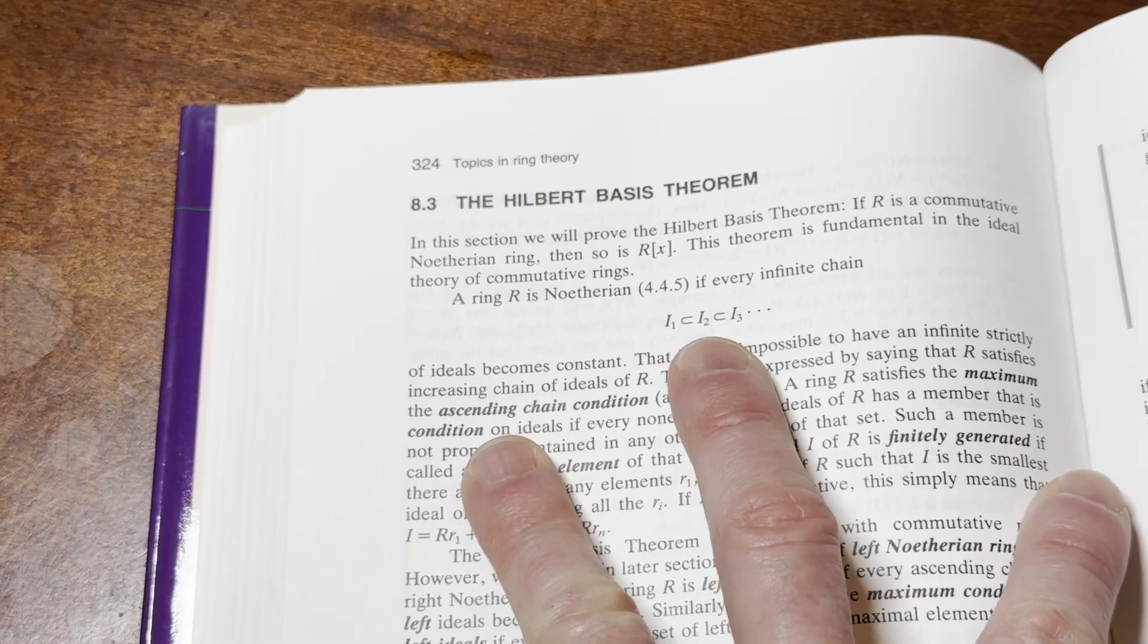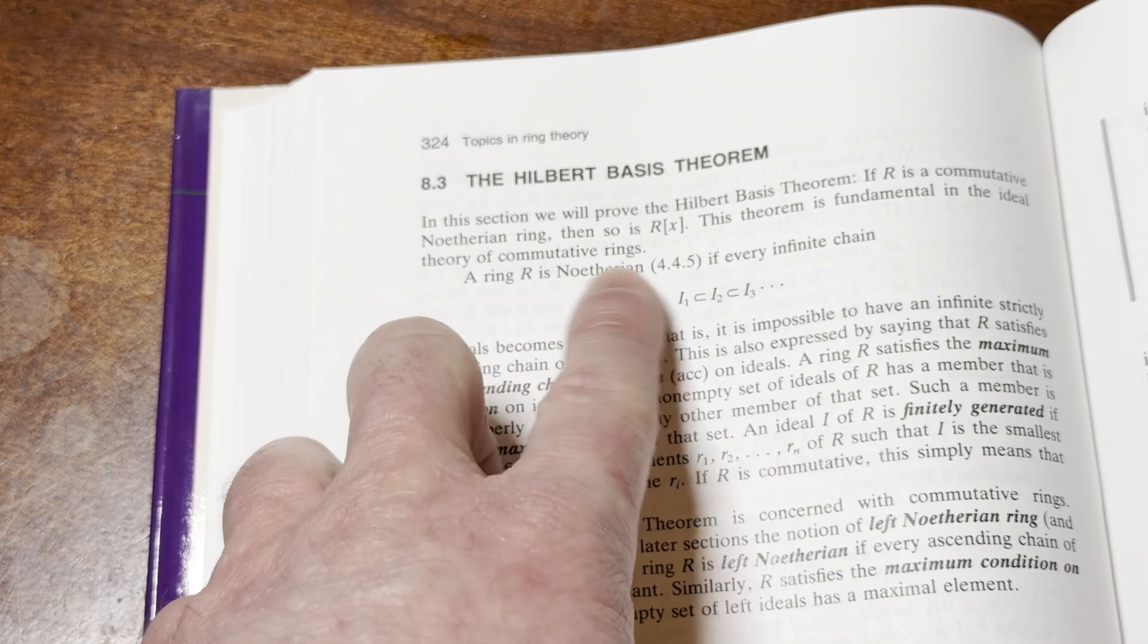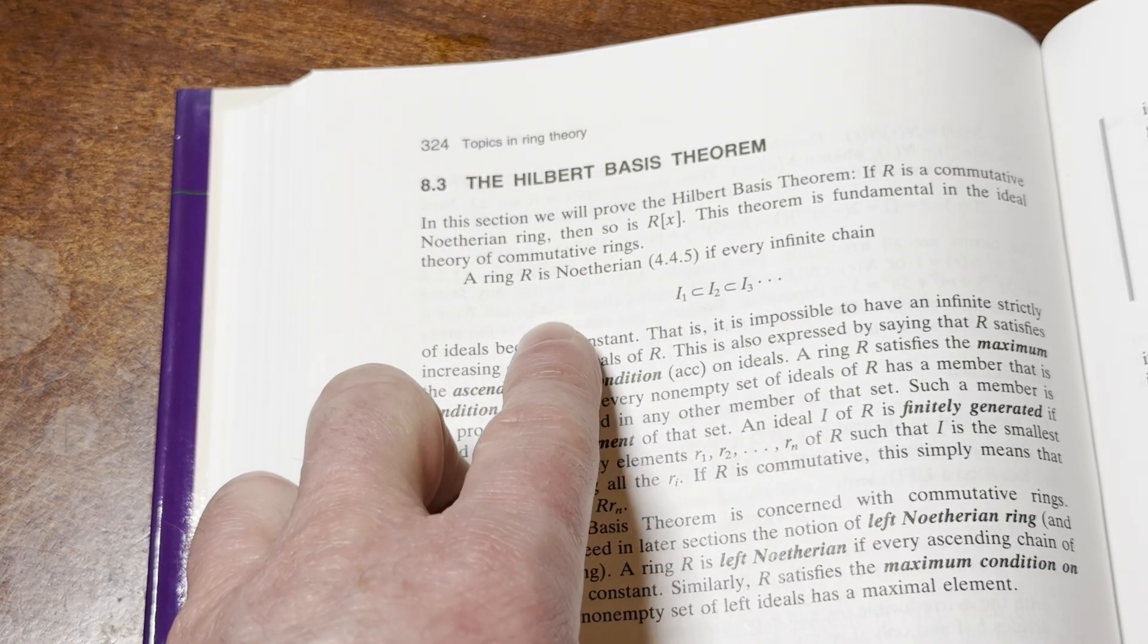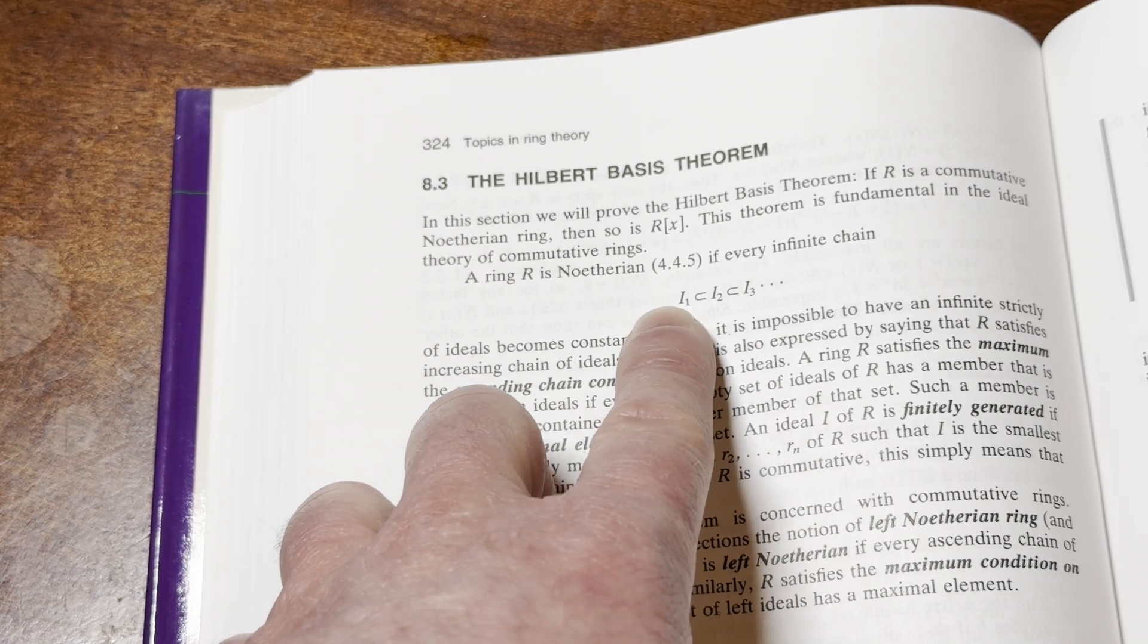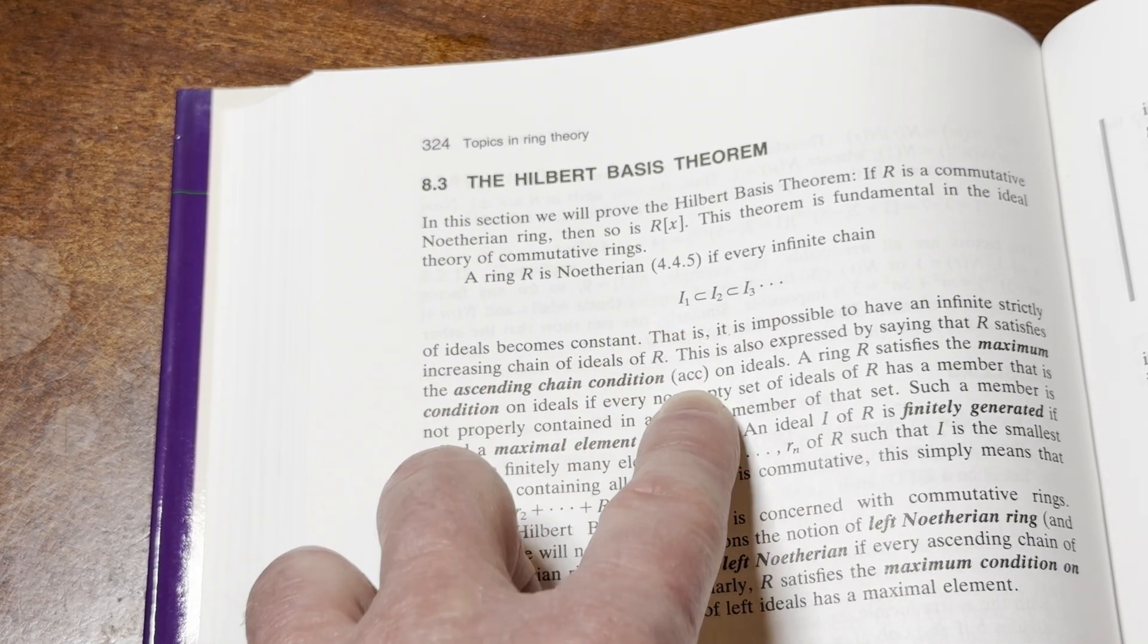If R is a commutative Noetherian ring, then so is R adjoin X. This theorem is fundamental in the ideal theory of commutative rings. A ring R is Noetherian if every infinite chain... These are ideals. You have this chain here. ...of ideals becomes constant.